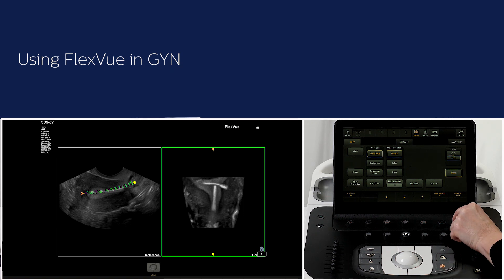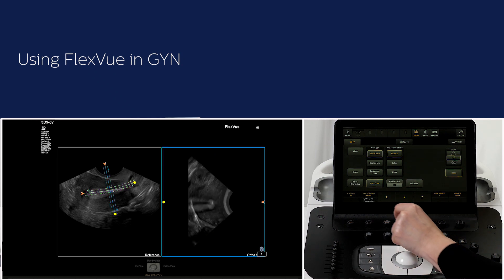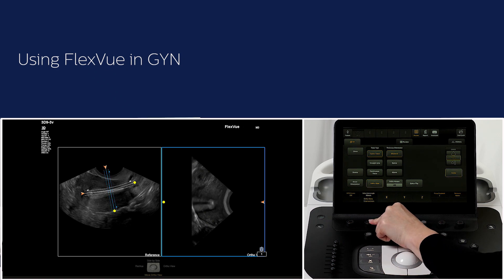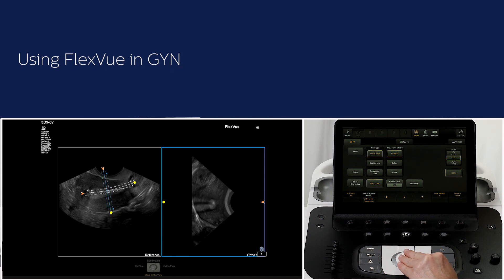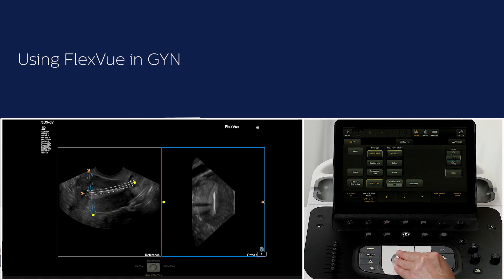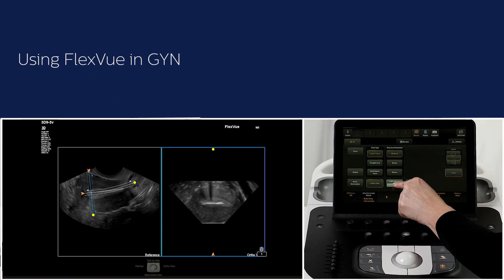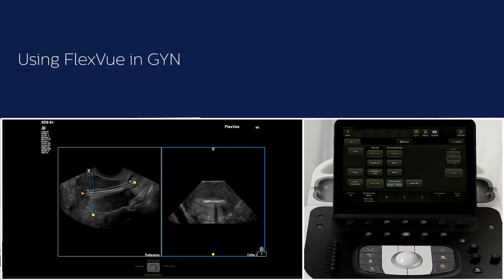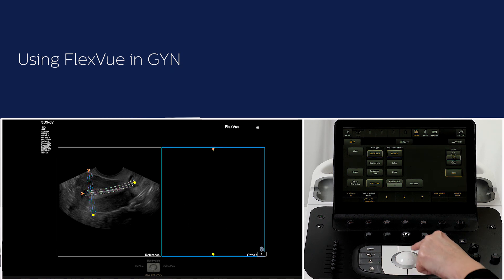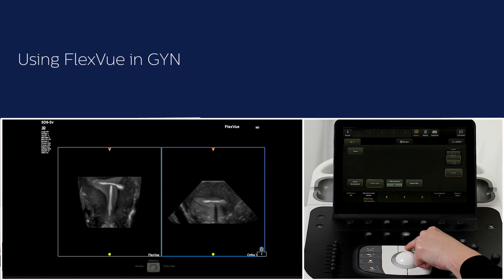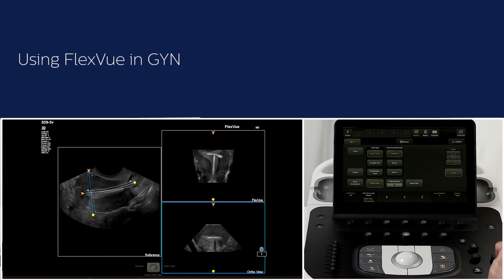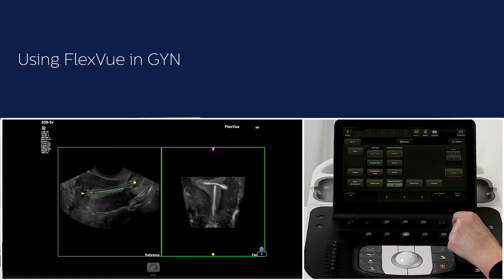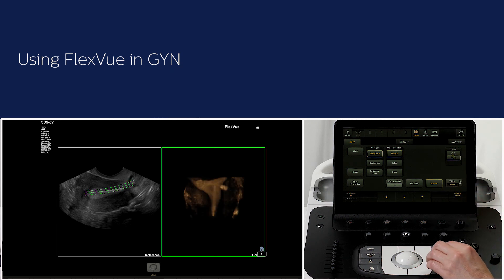Change the thickness and/or tissue emphasis if needed. Activate ortho view and adjust the intersection to see the FlexView and ortho view image side by side, or select a three up. Deselect ortho view and press volume, then choose the desired vision.